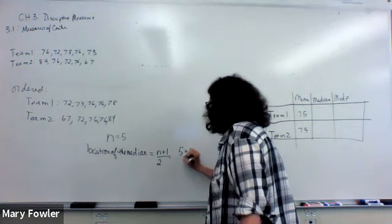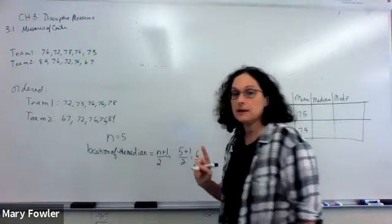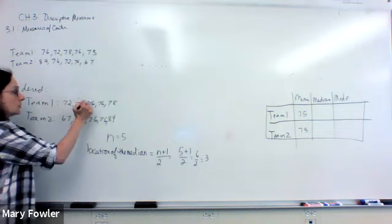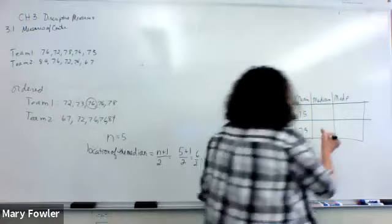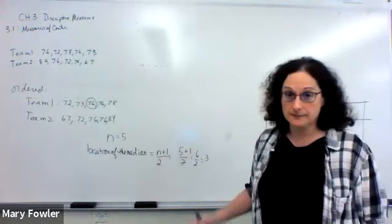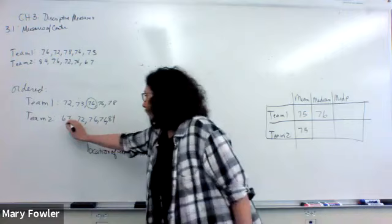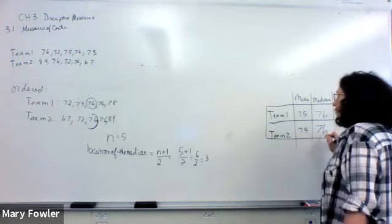So we have five plus one over two. That's six over two or three. Three is not the median, but it gives us the location of the median. So we come on over here to the beginning of the data set and we count in until we get to three. One, two, three. So we see that the median for team one is 76. And because team two has the same number of observations, there's five observations, the location of the median for team two is also going to be the third data point. One, two, three. Also 76.